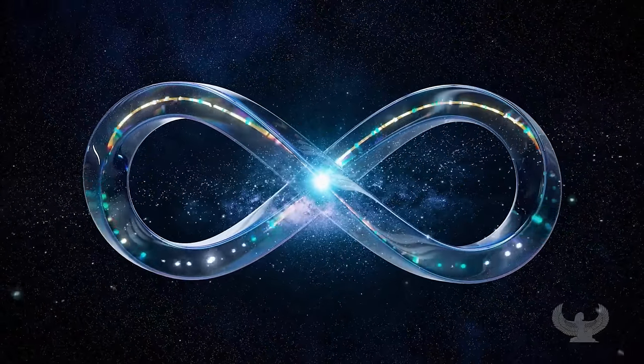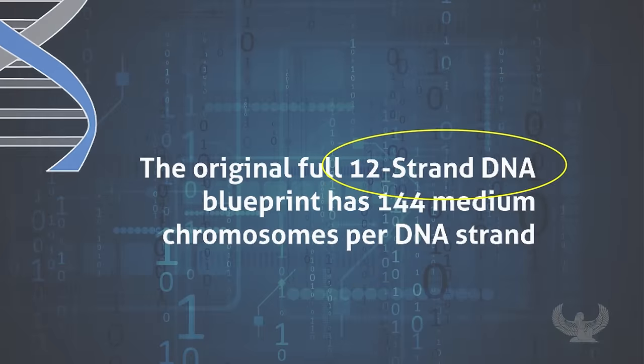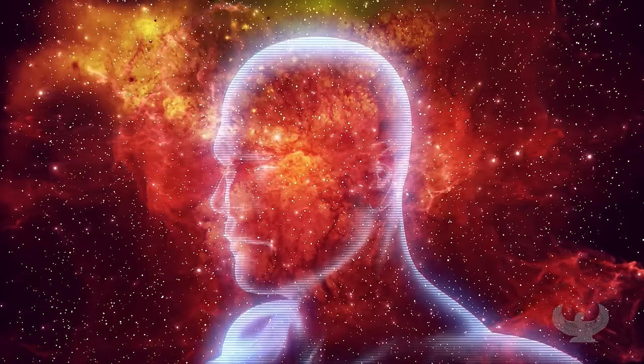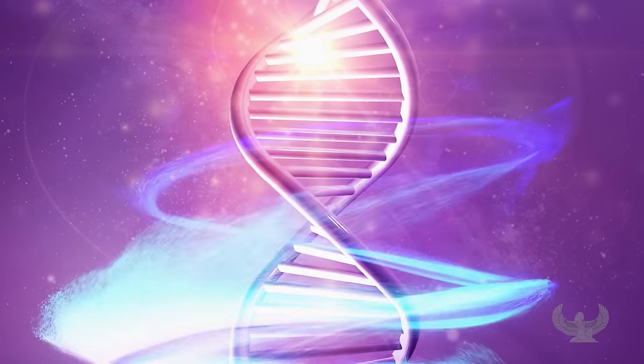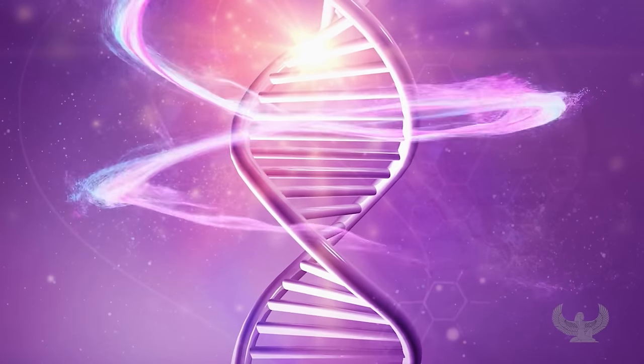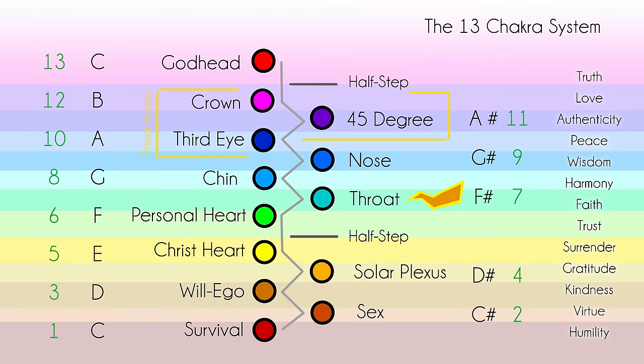Many today believe that human DNA was originally structured as a 12 strand system, allowing individuals to access higher planes of consciousness and multidimensional realities. The transition to a base 10 system altered the structure, reducing humanity's potential and creating a limiting experience of reality. This idea is also subtly linked to the connection with the ancient Egyptian 13 chakra system.